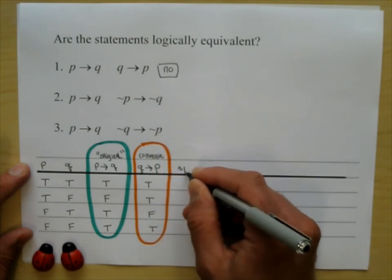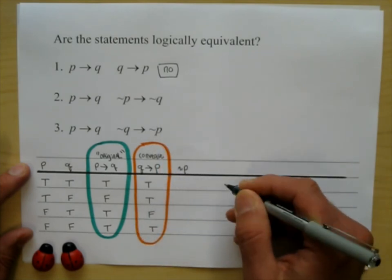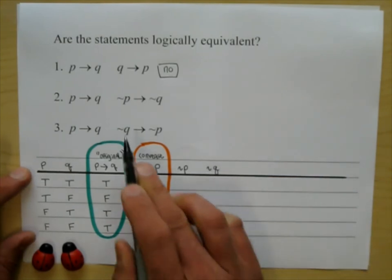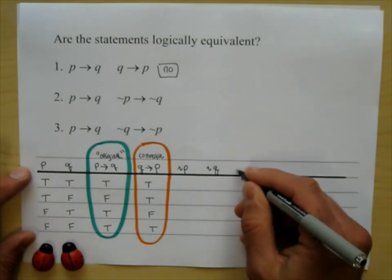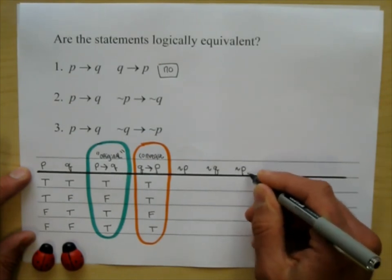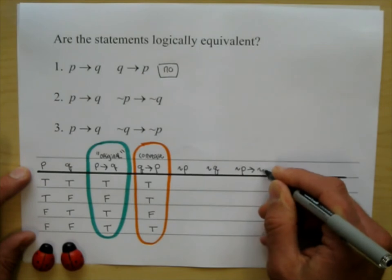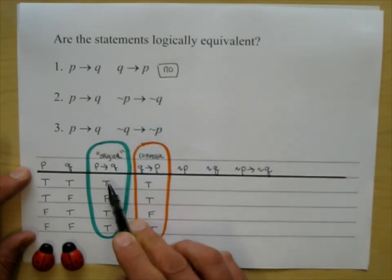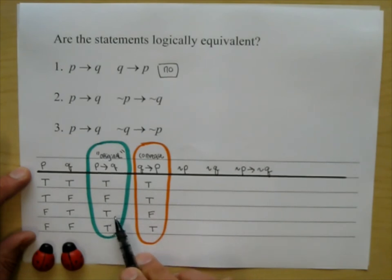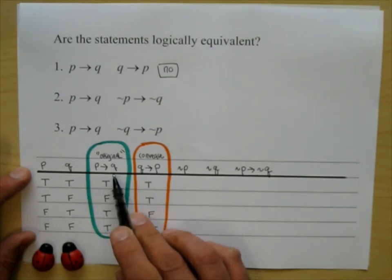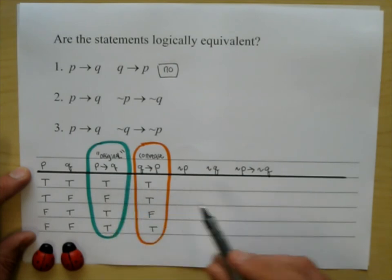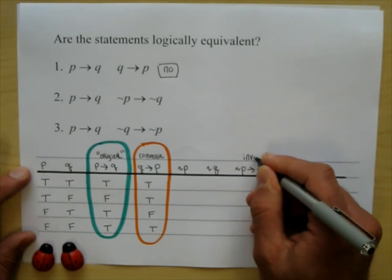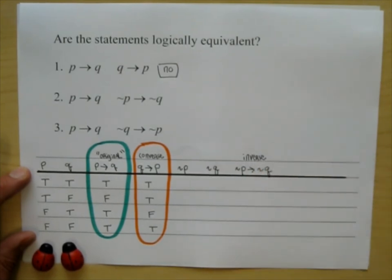This statement — 'not P then not Q' — has a name. If you look at the original and you've negated the hypothesis and negated the conclusion, the name of this statement is the inverse, which was covered last time as well.